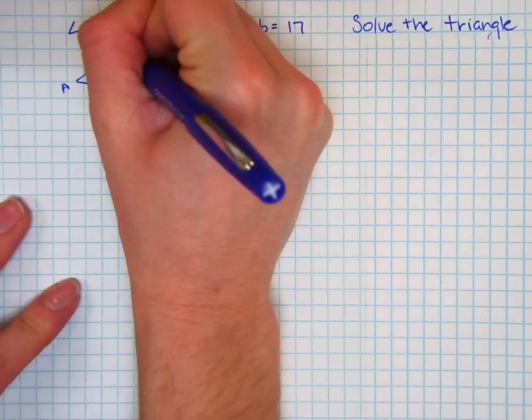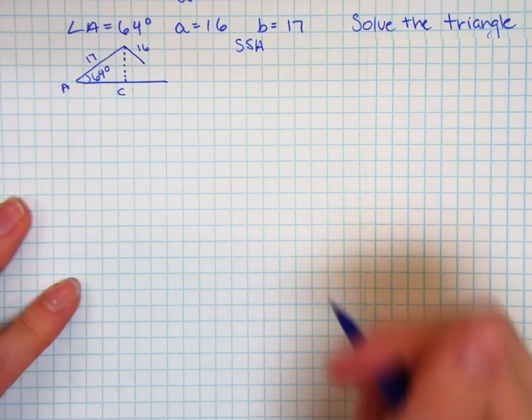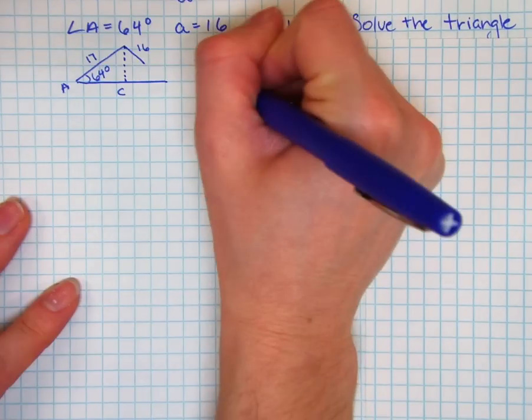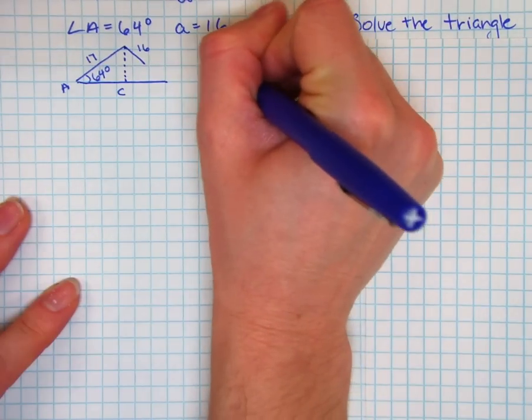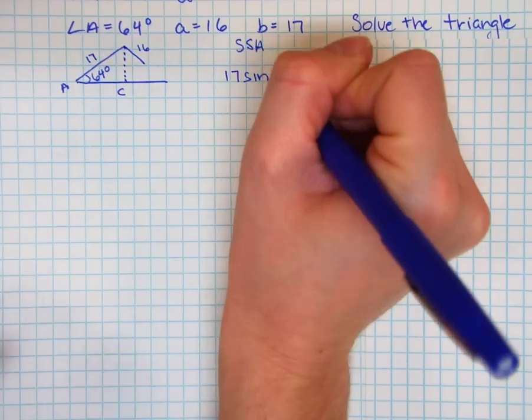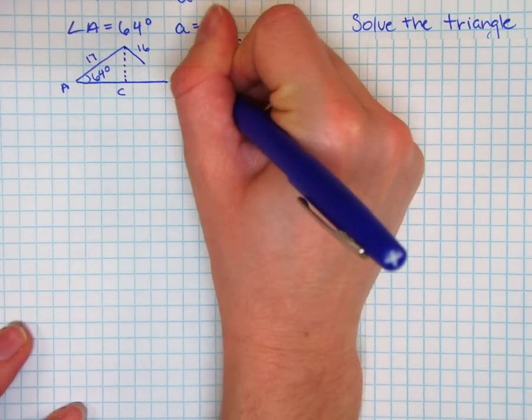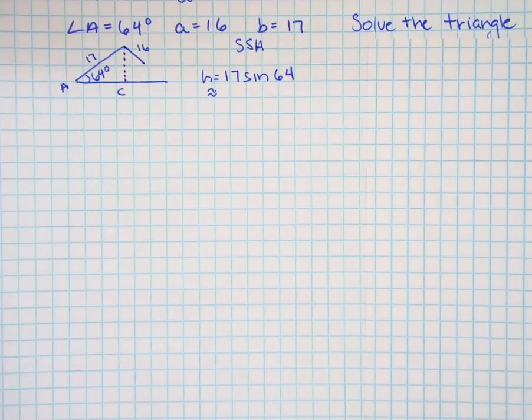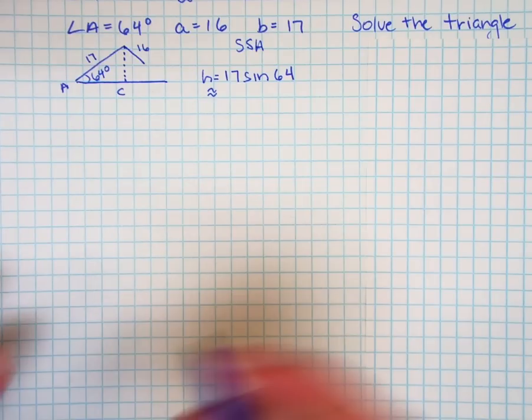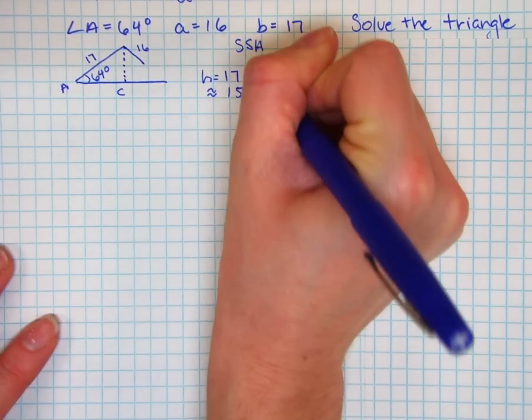So first I need to test to find out what the height of this triangle is. The height of the triangle will be B sine A, that is 17 sine 64 degrees, and in this triangle for that we get 17 sine 64 is approximately 15.28.